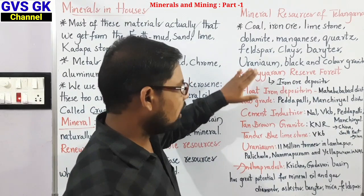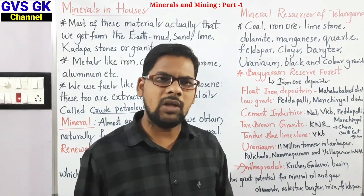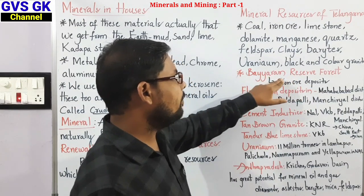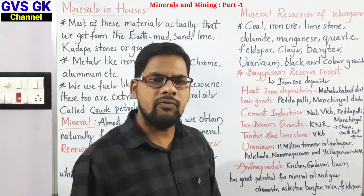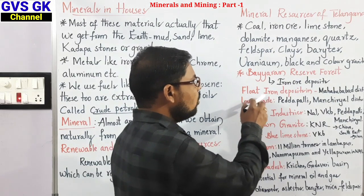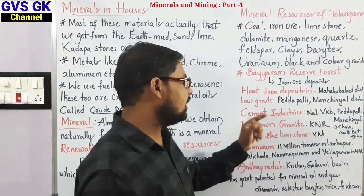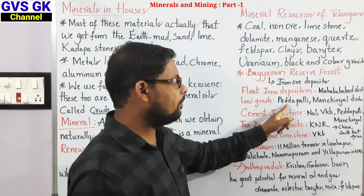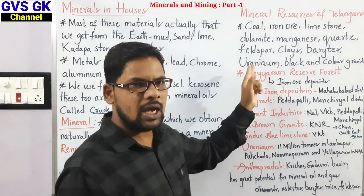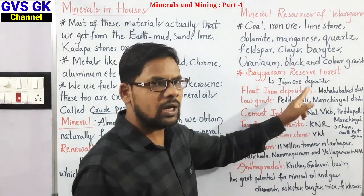Telangana has plenty of iron resources, divided into three types based on quality. First, fine quality iron ore deposits are found in the Baiyaram reserve forest. Second, float iron deposits are in Mahabubnagar district. Third, low grade iron deposits are in Peddapalli and Mancherial district.